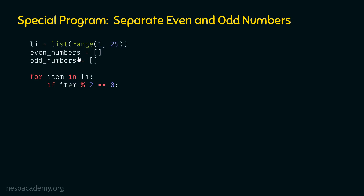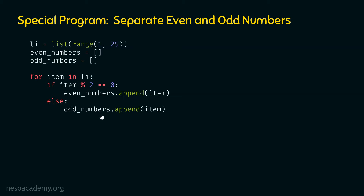We append the item using: even_numbers.append(item). This allows us to extract even numbers from the list li. Now, what happens if item is not divisible by 2? Then that item is definitely an odd number, so we must append that item to the odd numbers list using the else clause: odd_numbers.append(item).